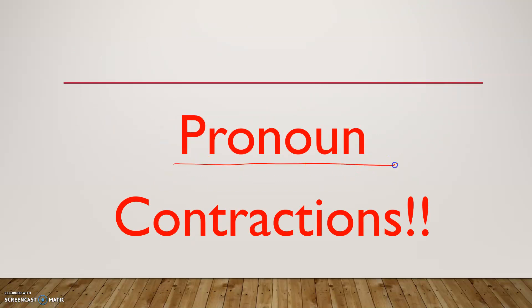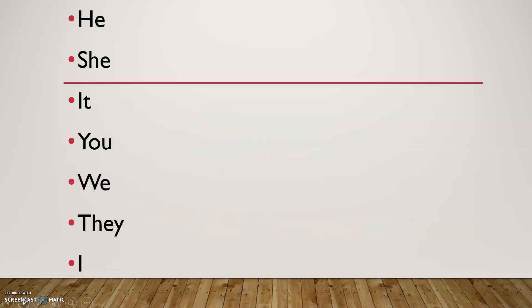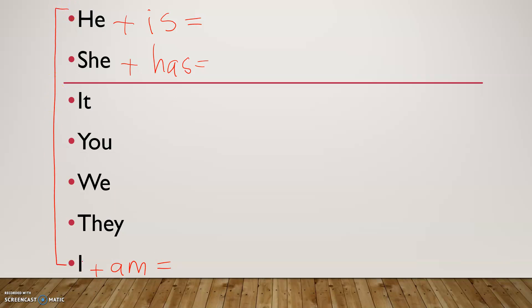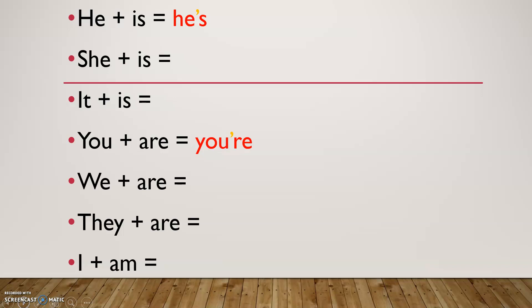Our lesson today is pronoun contractions. Let's remember the pronouns: he, she, it, you, we, and they. If I want to contract he is, she has, or I plus am, what would they be? That's why it's called pronoun contractions — today we learn how to write contractions with pronouns. He plus is: we cross the I in 'is', keep the S, and replace it with an apostrophe, giving us he's.